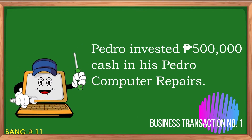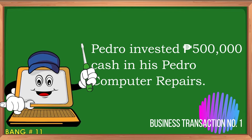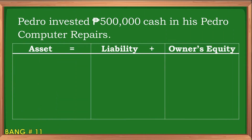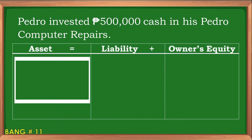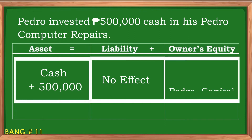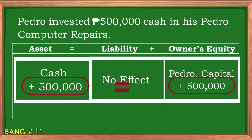Business transaction number one: Pedro invested 500,000 pesos cash in his Pedro Computer Repairs. Let us see the effects of this business transaction using the basic accounting equation. For asset, there is an increase of cash of 500,000 pesos; no effect for liability; and an increase of 500,000 pesos under owner's equity using Pedro Capital account. Notice that the effects from the left to the right side of the formula are equal.